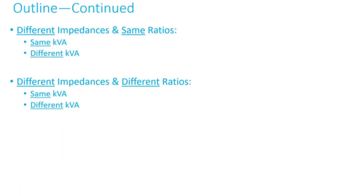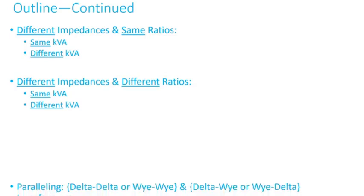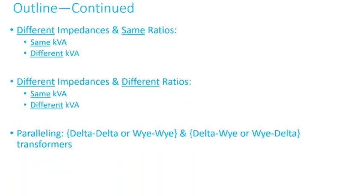So these are just more examples that way we can see the impact of these parameters on transformer paralleling: impedances, ratios, and KVA or MVA. Also, let me just get the laser pointer.